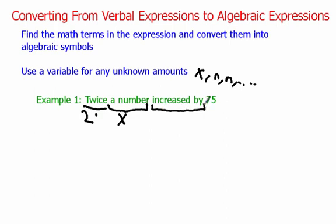Moving on, we've got 'increased by.' Looking at your table, you should see that 'increased by' is an addition word. Think about it: when the temperature increases, it's going up, getting hotter. When you increase the amount of money in your bank account, you're getting more money. So 'increased' means addition. And then 75 — well, 75 is just 75. It's already a math term.